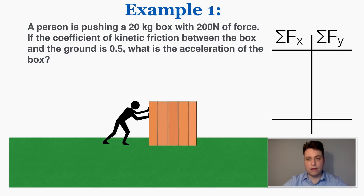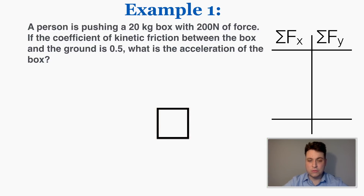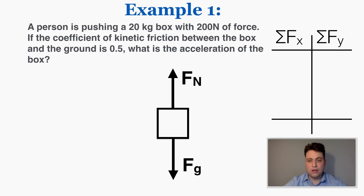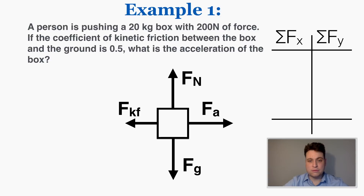To figure out the acceleration we have to figure out the net force acting on the box, so I'm going to construct a free body diagram. I know that there's a force of gravity pointing down, a normal force pointing up, a force applied from the person, and a force of kinetic friction on the box because this box is moving.